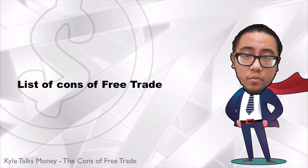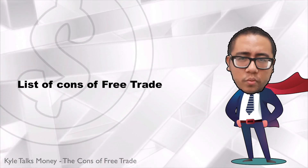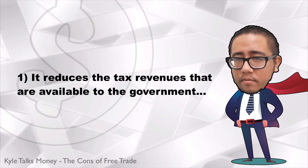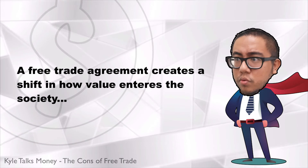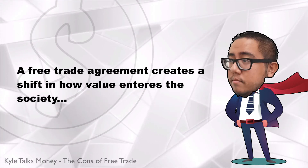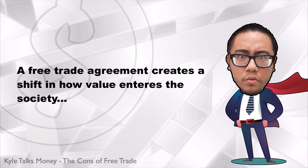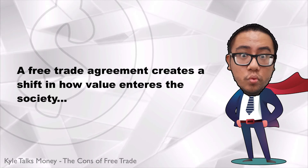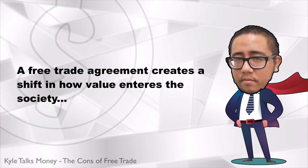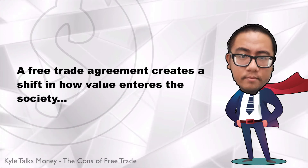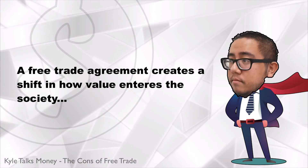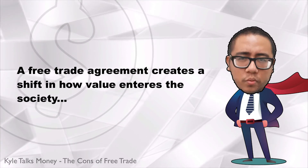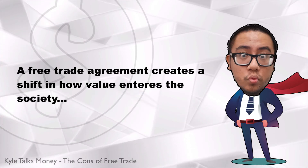For all the good of free trade, we need to look at the bad. So here are the cons of free trade. Number one: it reduces the tax revenues available to the government. A free trade agreement creates a shift in how value enters society. Before implementation, goods and services generate revenues through tariffs and fees. Once the agreement goes into effect, the money flows to corporations instead. It then becomes the government's responsibility to collect taxes from profits and revenue earned from the new structure. This is why many smaller countries try to avoid free trade — they often struggle to replace the revenues that import tariffs and miscellaneous fees generate for them.